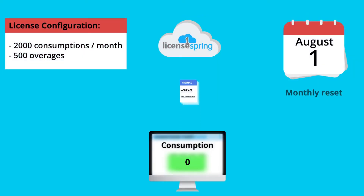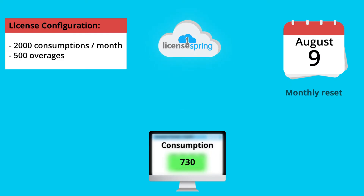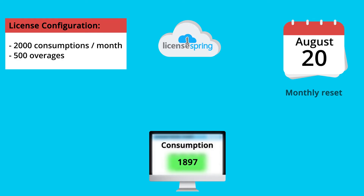Consumption-based licensing allows the software vendor to meter or count the usage of a given resource within their application. A resource can be a number of reports generated, API requests made, minutes of a service used, or number of times an application is executed.